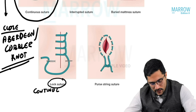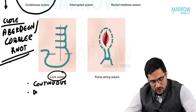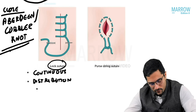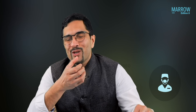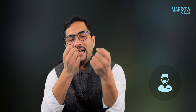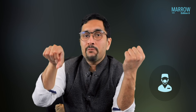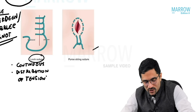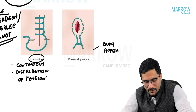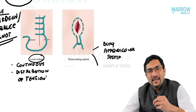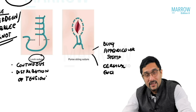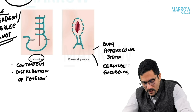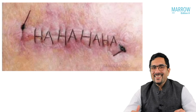A locking suture is a type of continuous suture where we keep locking it; this helps in distribution of tension. It has not been asked in any exam. A purse string suture — like the drawstring on a bag — when you pull the threads the mouth closes. In surgery, purse string sutures are used to bury the appendicular stump during appendicectomy, and in gynecology for cervical encirclage when there is an incompetent cervix.